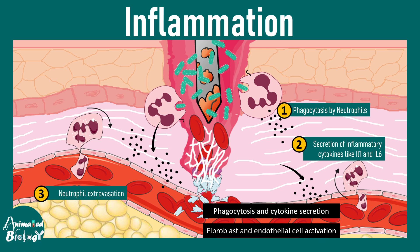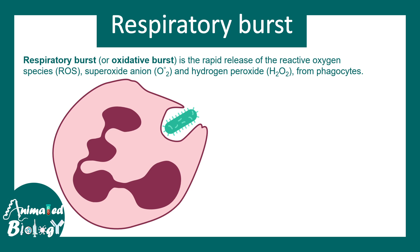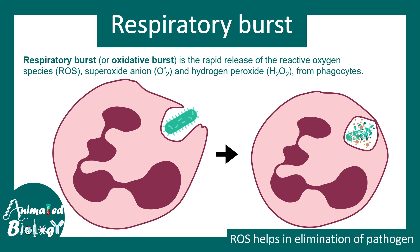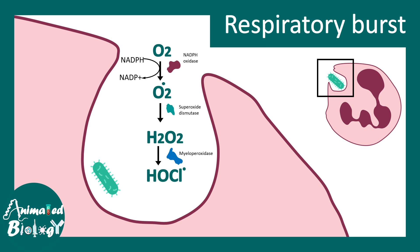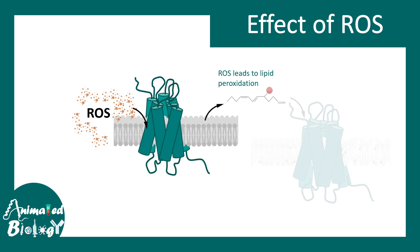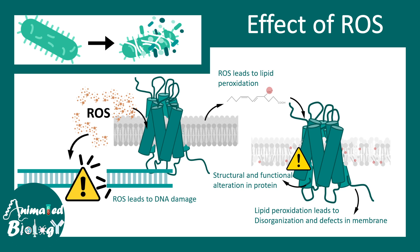Phagocytosis and cytokine secretion are key molecular events, with fibroblast and endothelial cell activation occurring in the long term. Respiratory burst is the mechanism by which neutrophils engulf and kill the pathogen using reactive oxygen species (ROS). Oxygen is converted to ROS via NADPH oxidase; O2 free radicals are converted to H2O2 by superoxide dismutase, then H2O2 is converted to HOCl free radical by myeloperoxidase. These ROS cause lipid peroxidation, protein conformational changes, and DNA damage, leading to bacterial killing.